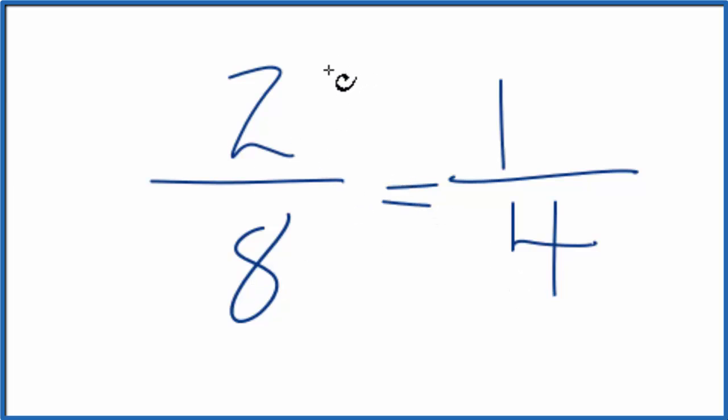4 times 2 is 8. So we can simplify 2/8 down to 1/4. We can't simplify this any further.